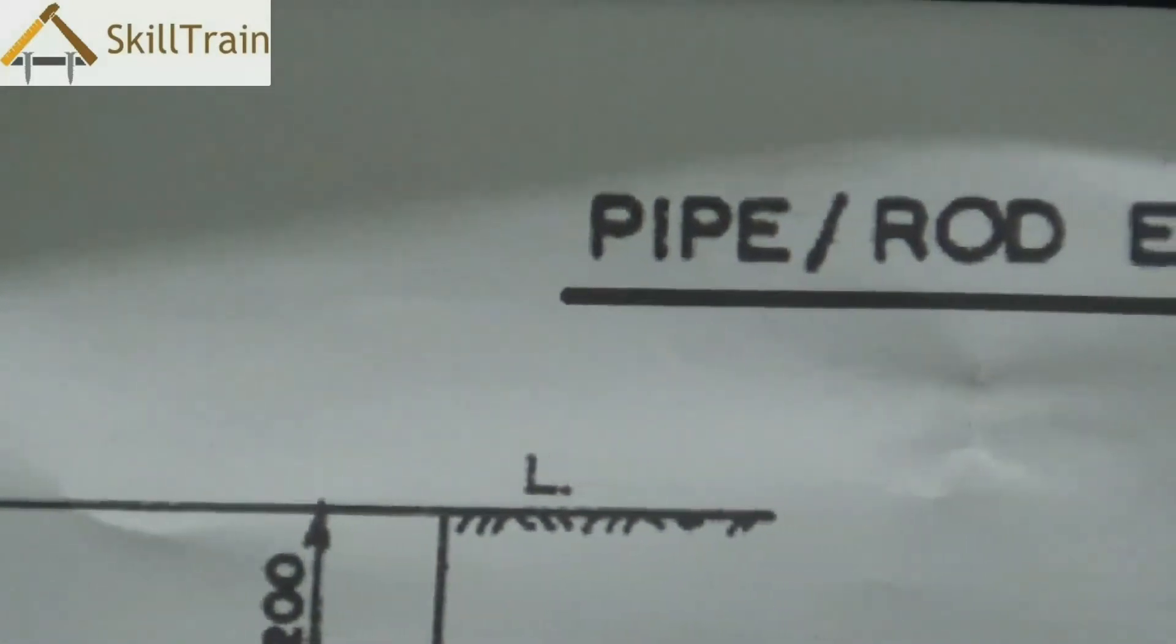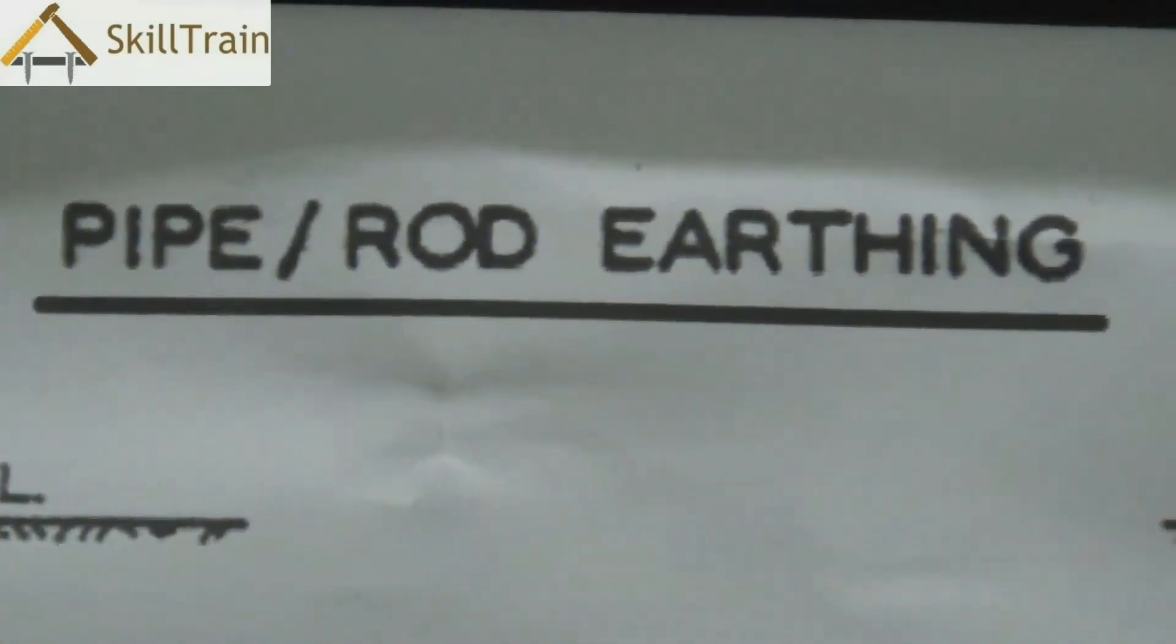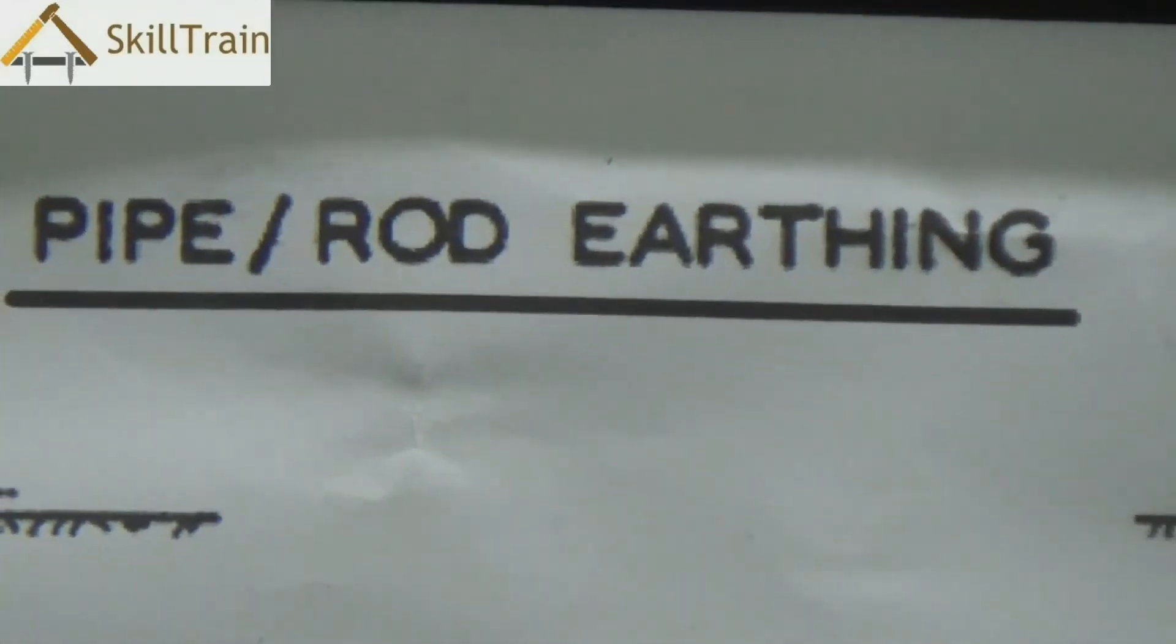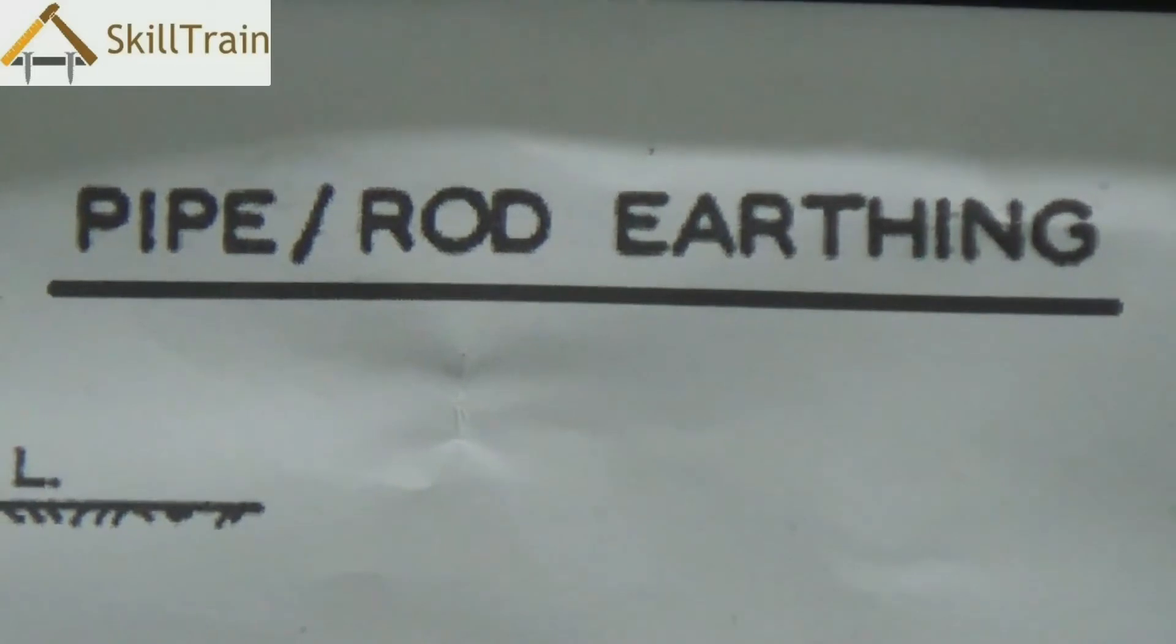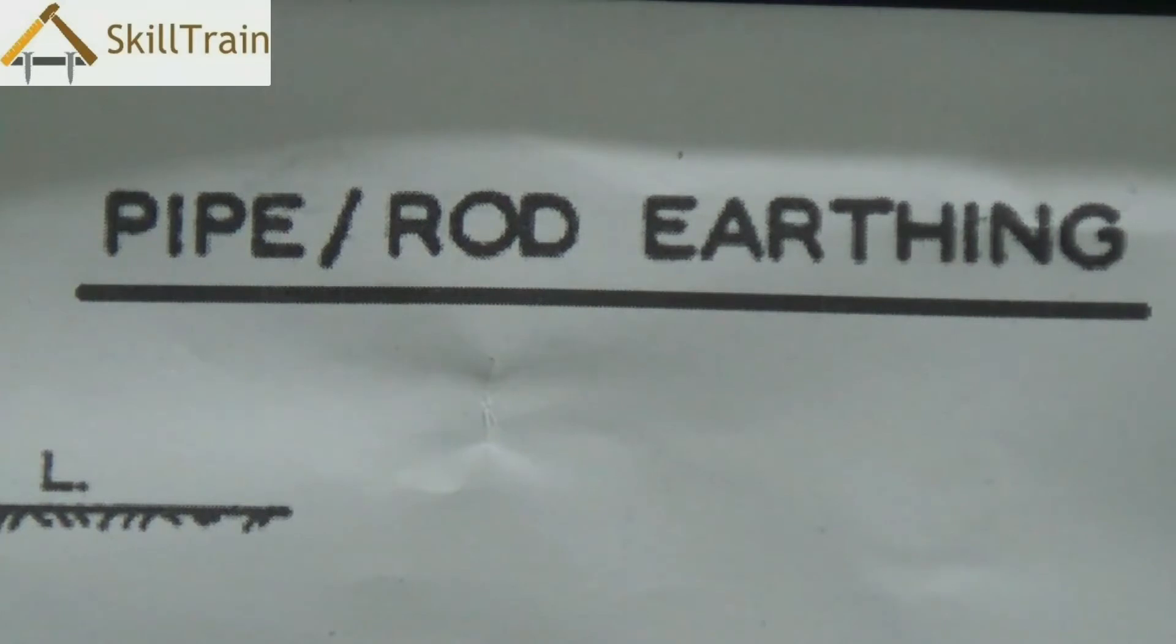After you do the earthing, you will need to check whether your earthing is working properly or not. In order to check that, we have already shown you that method earlier in one of the videos. We take a test lamp and place one point of the test lamp on the phase and the other point on the earthing. If the bulb is glowing, that means that the earthing is functioning properly. You need to ensure that you check the earthing after you install it or establish the entire connections.